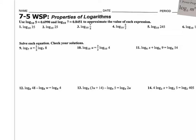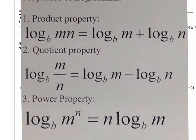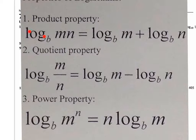Yesterday we had three videos on the properties of logarithms and this is a continuation of practicing those properties. We should have these memorized. The product property: 'product' means multiply, so if you have log of something times something, you can split it into two logs — log of the first plus log of the second. Or you could combine two logs with a plus sign into one single log, but only if the bases are identical.